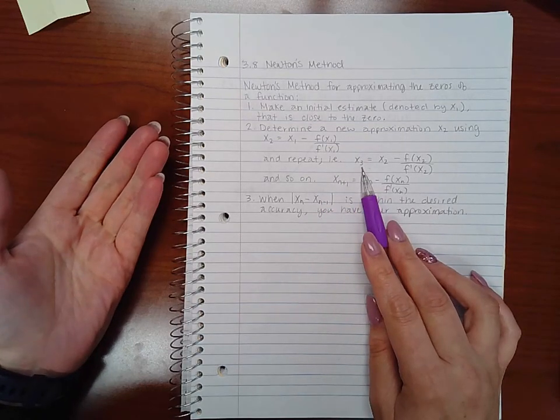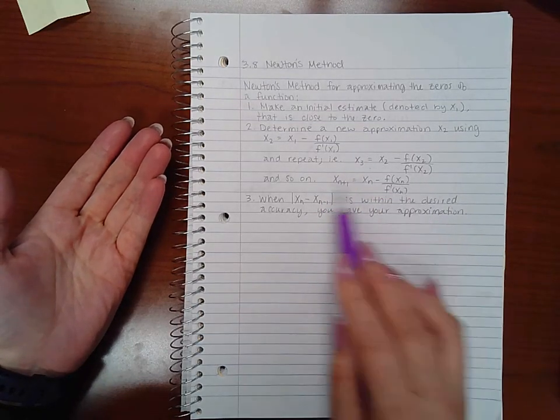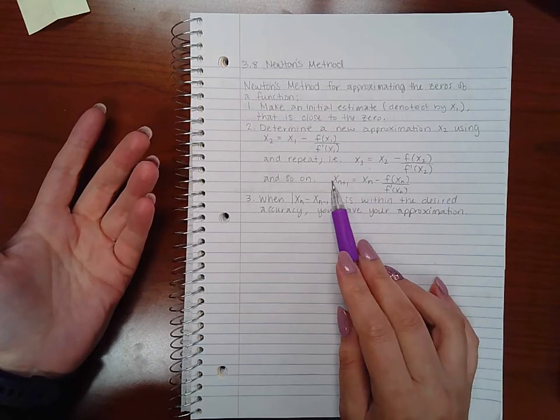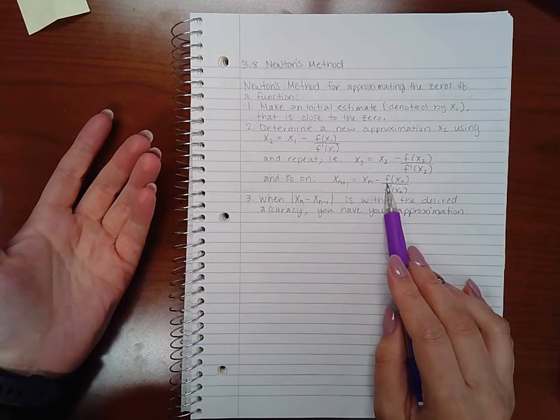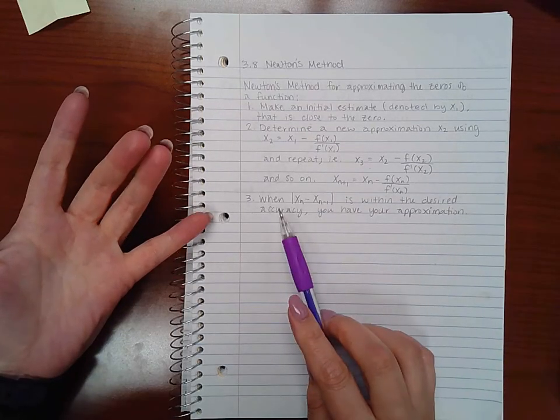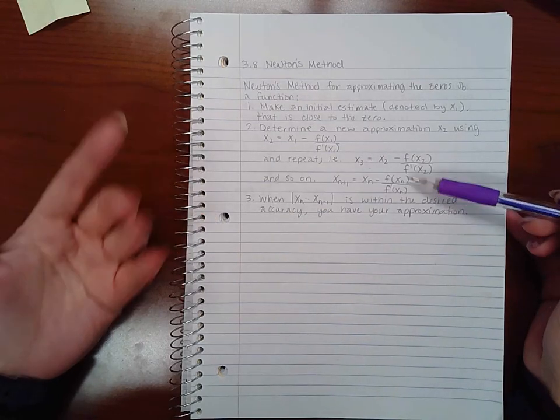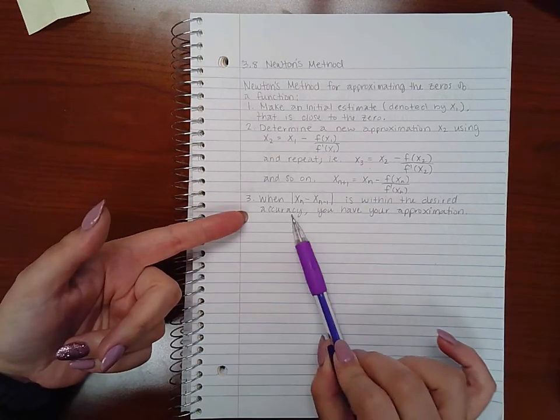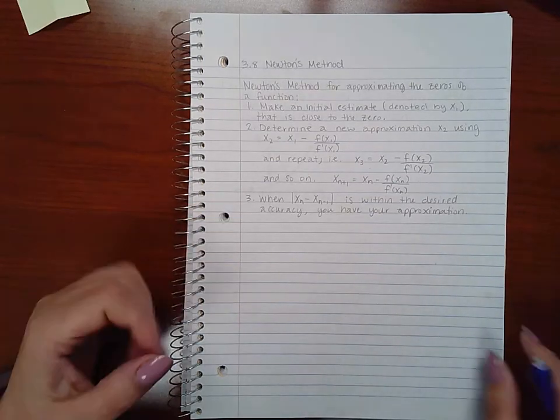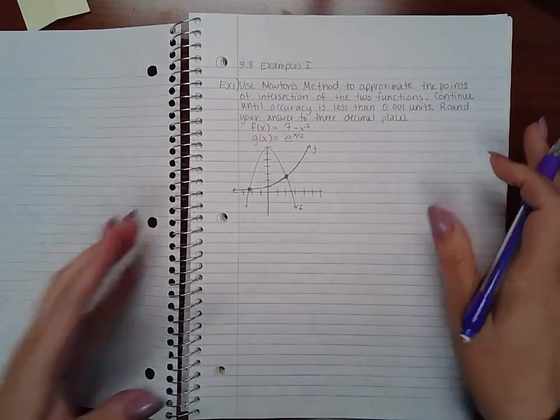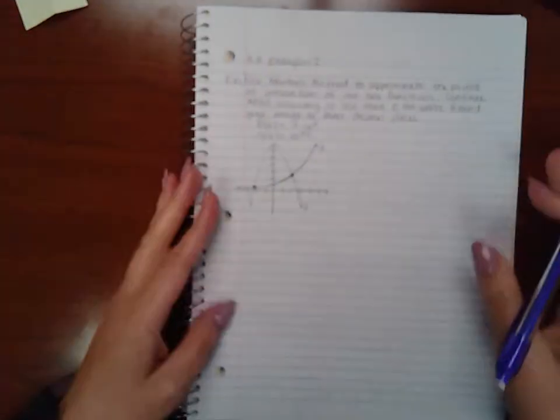And so your third estimate will be used from x2, and your fourth estimate will be using x3, so on and so forth. You keep going until the distance between one estimate and the previous estimate is within a desired accuracy. So we're going to apply that to this problem here.